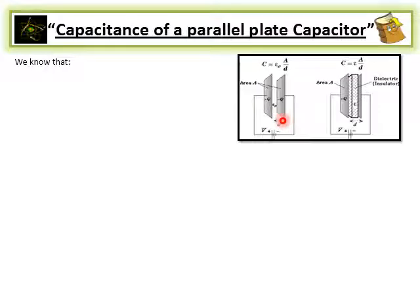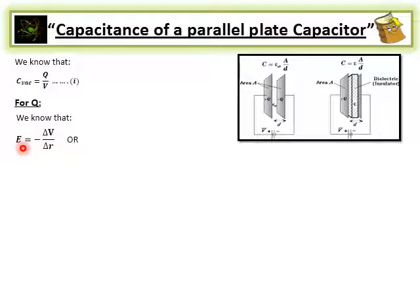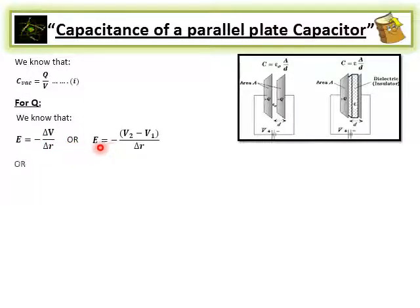We are going to derive the relation for the capacitance. We have the formula C = Q/V, which is equation number 1. We need the value of Q for equation number 1. We know that E = −ΔV/Δr, and we can write this as E = −(V₂ − V₁) / Δr.